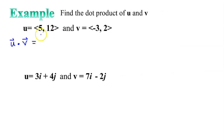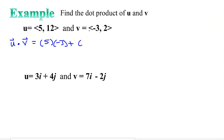For example, if this is U and this is V, then the dot product will be 5 times negative 3 plus 12 times 2. In other words, negative 15 plus 24, which is 9.